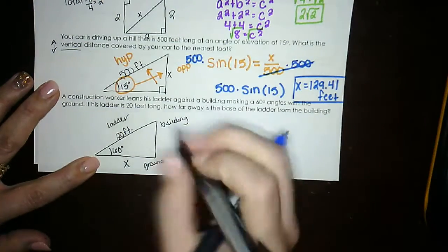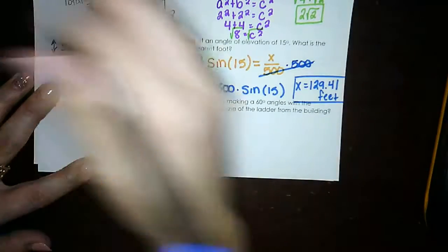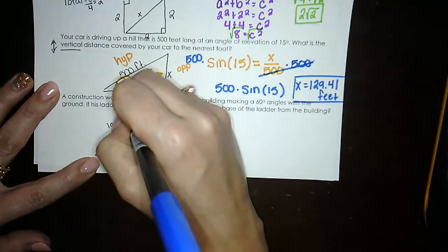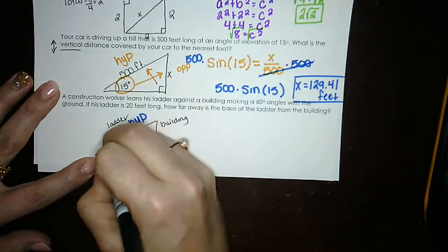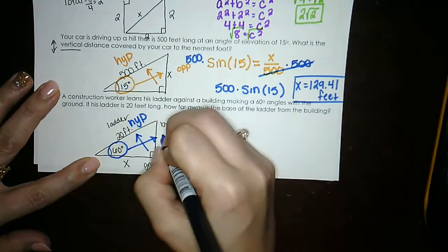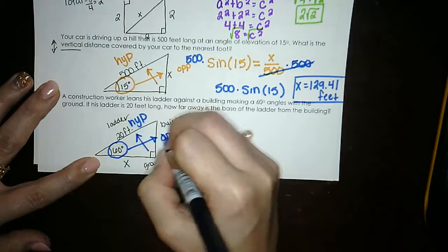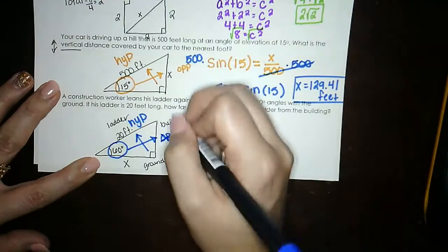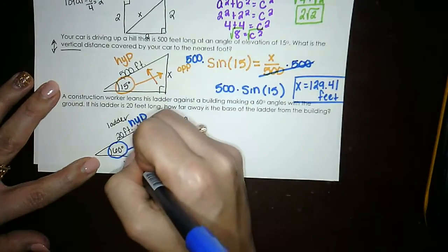So first, like always, what's across from the right angle is our hypotenuse. Across from the angle we are given is opposite. Nothing is here, so I'm going to cross it out. I don't have any information here, and then that means x is the adjacent.